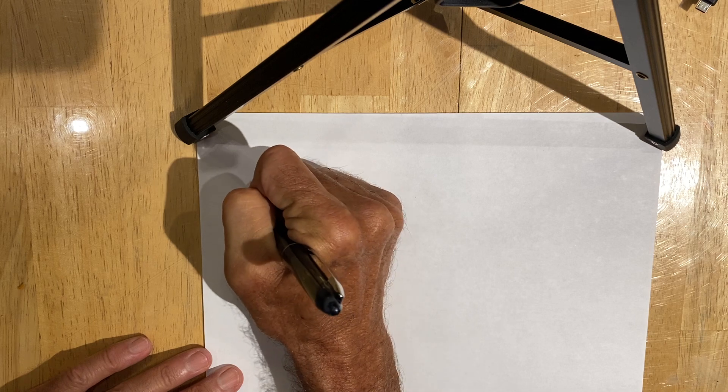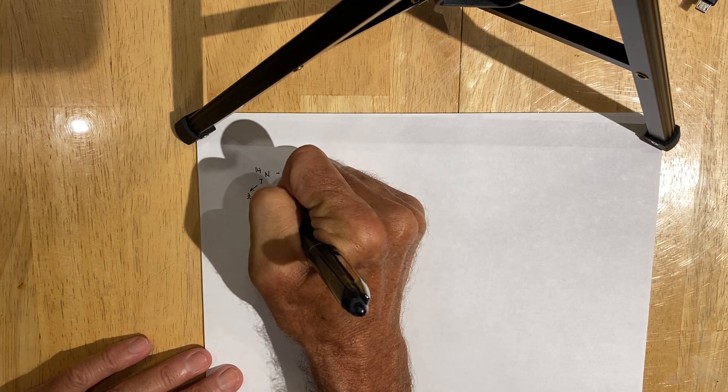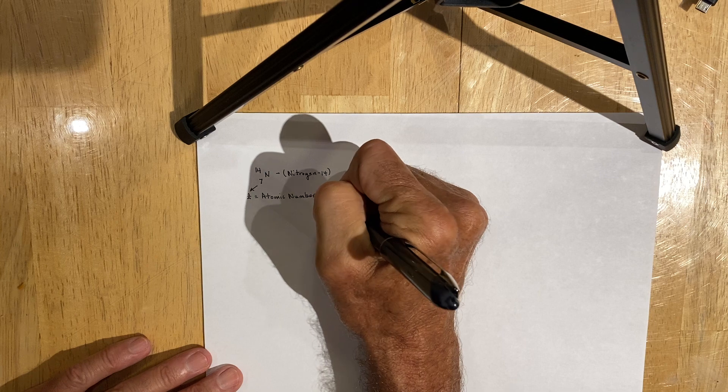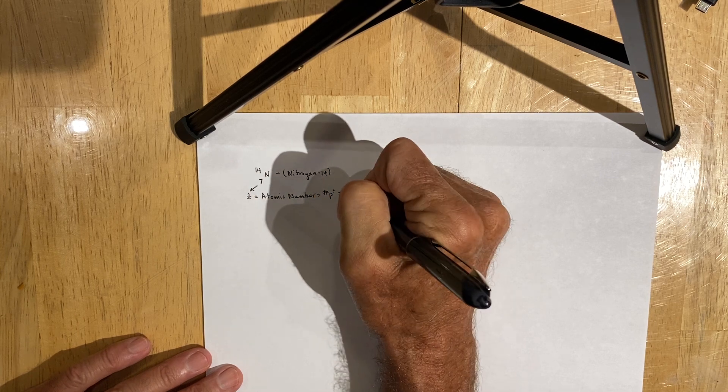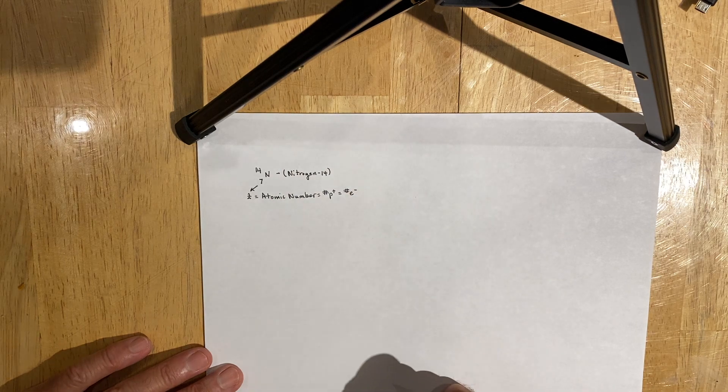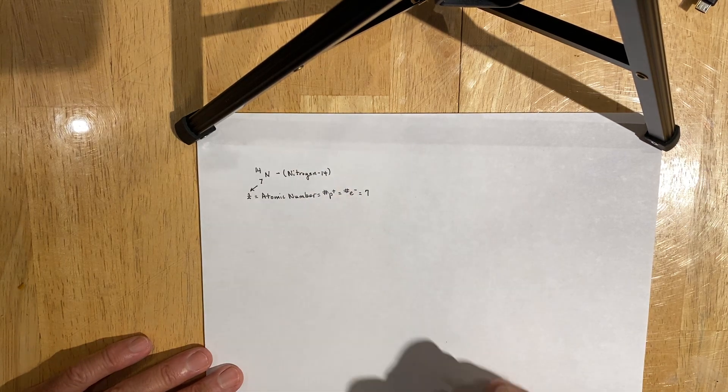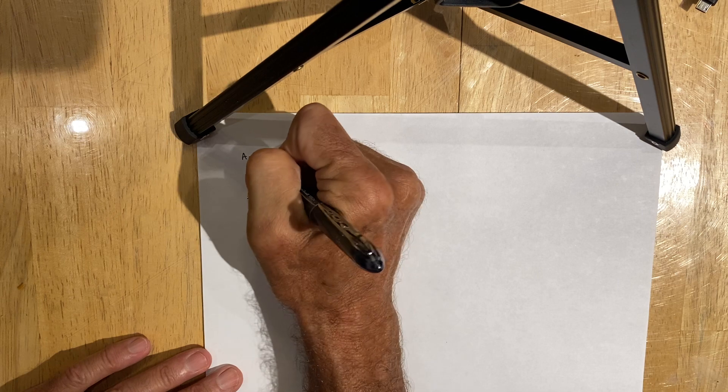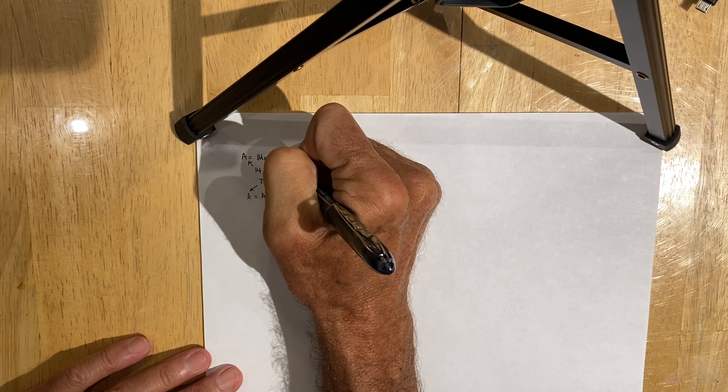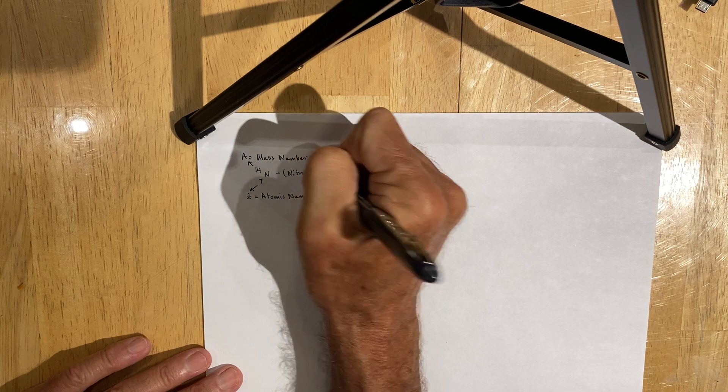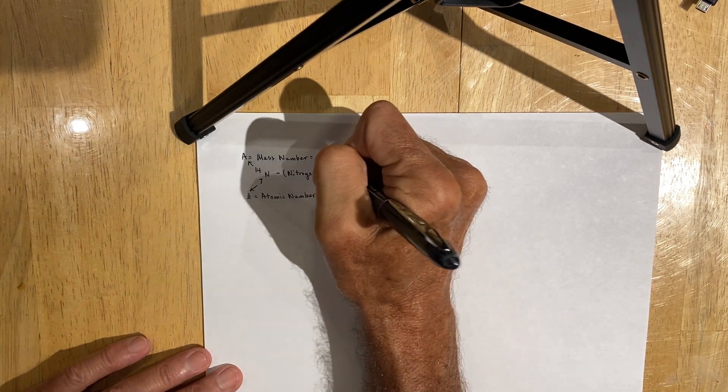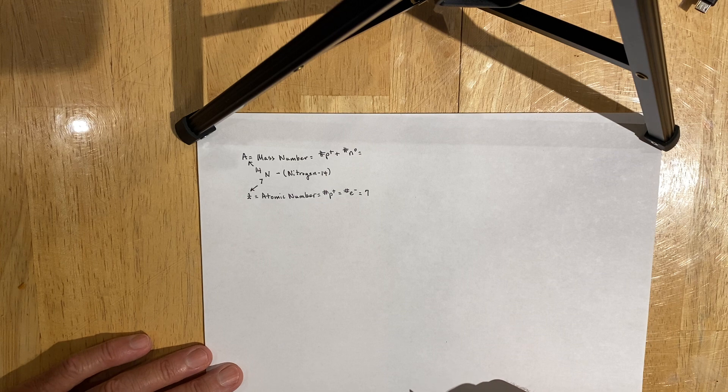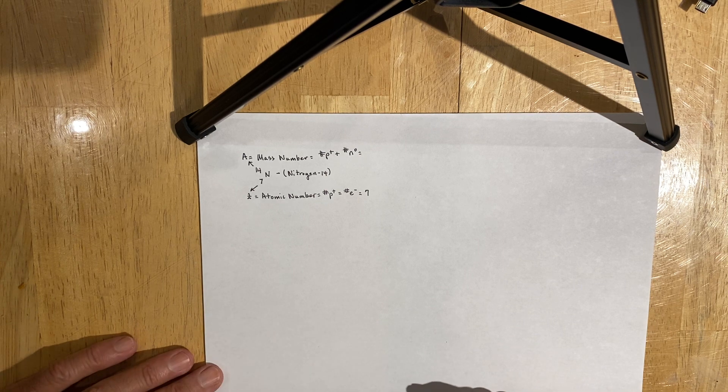The 7 represents the Z value, which is also known as the atomic number, which is equal to the number of protons, which also equals the number of electrons in a neutral atom, which in this case is 7. The 14 represents what we affectionately refer to as the A value, which is the mass number, which is equal to the sum of the protons plus the number of neutrons, which have no charge, that consist of or make up the nucleus of an atom.